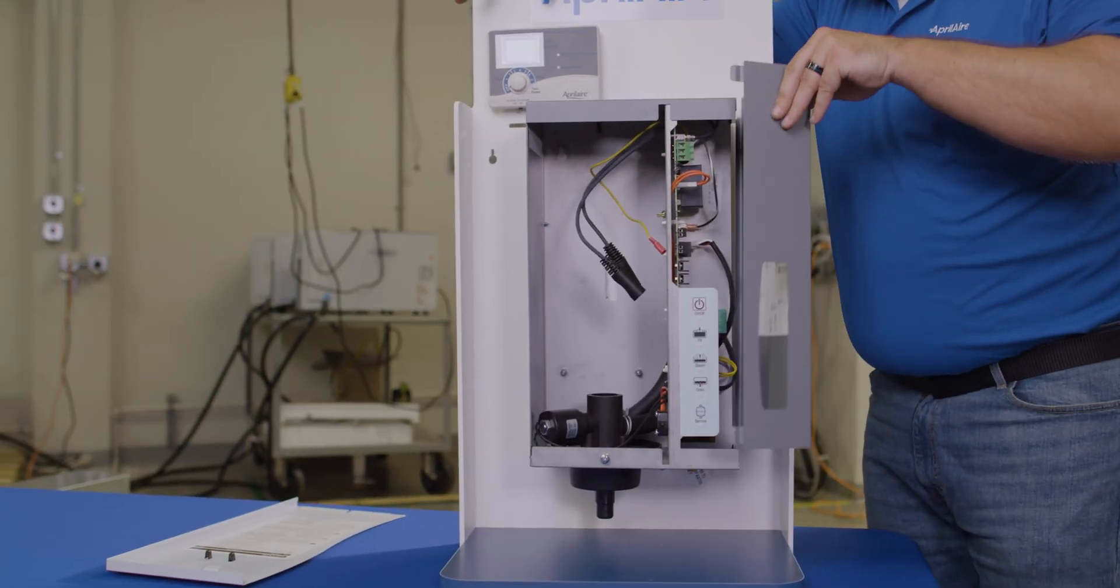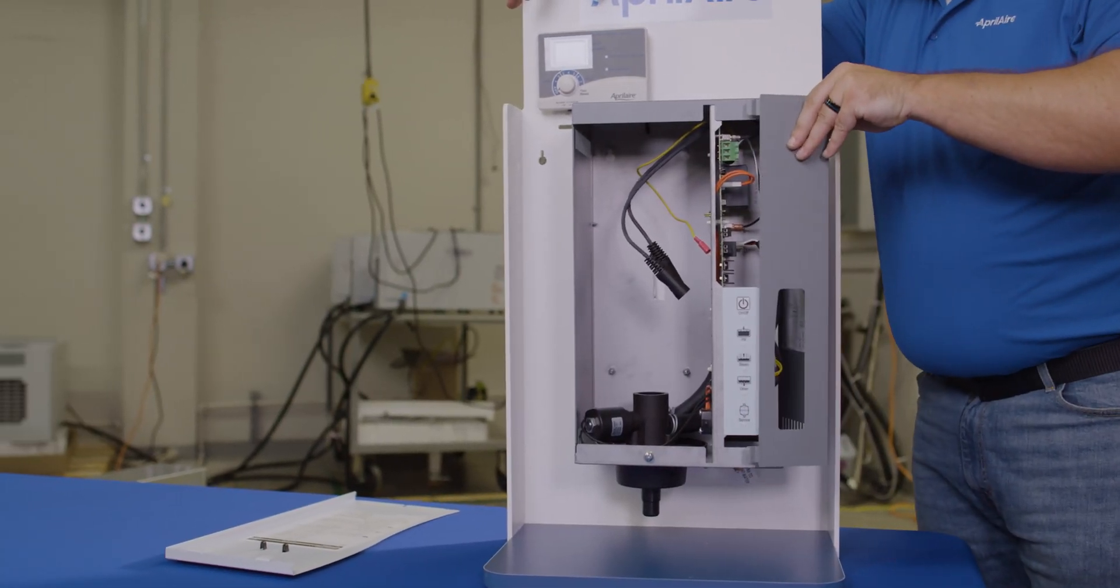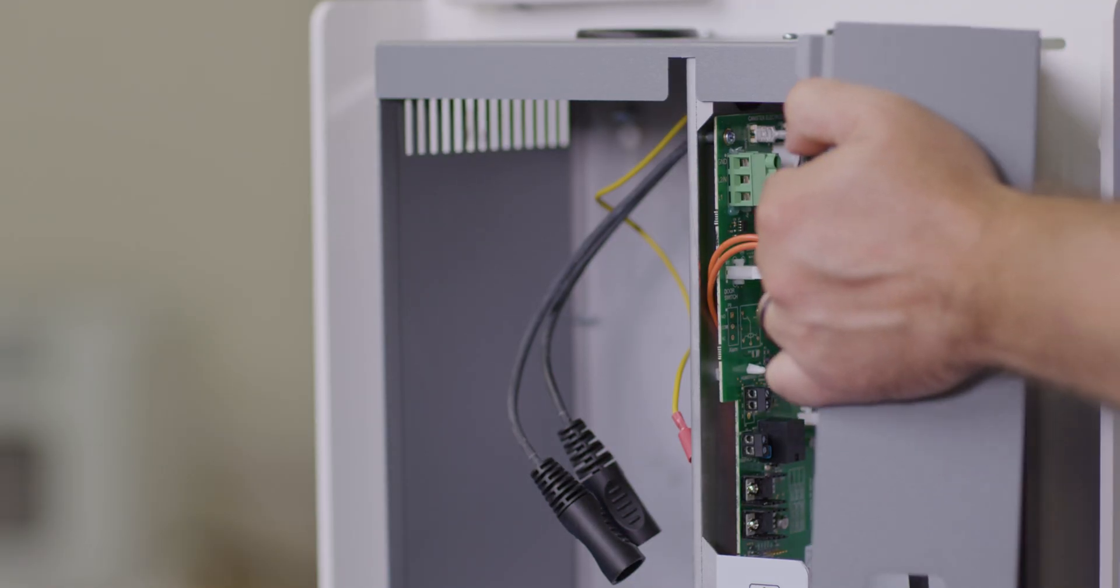Now that you've replaced the electrode wires and ensured that their connection is secure, it's time to replace the side panel.